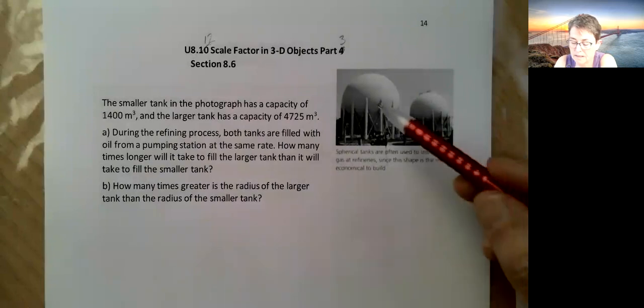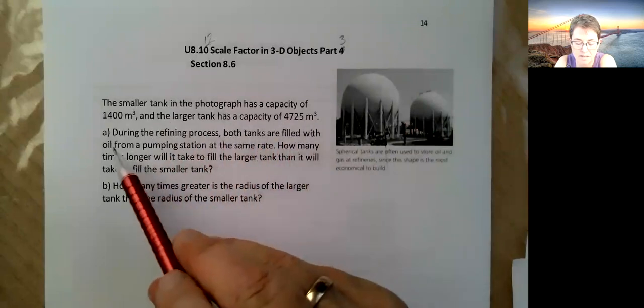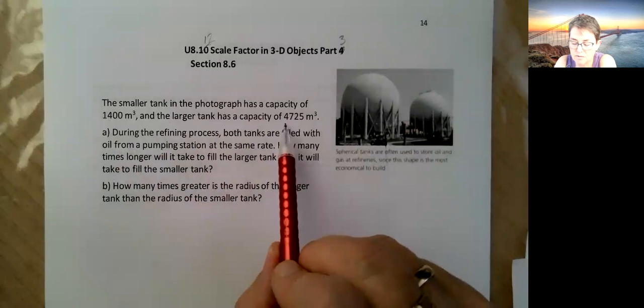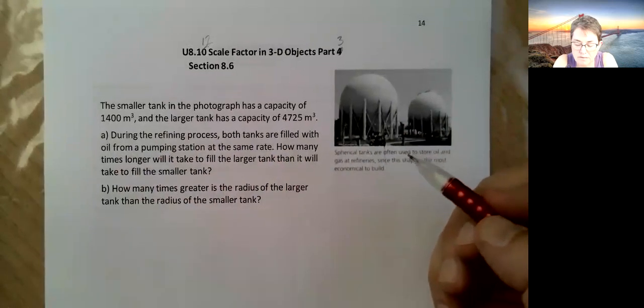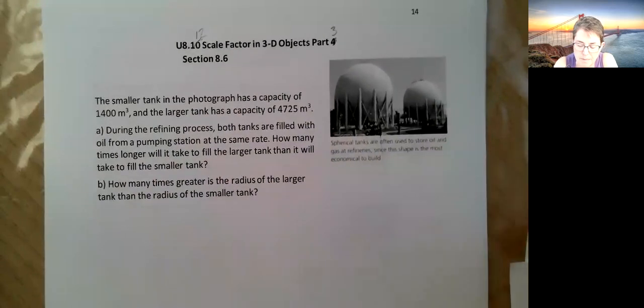Alright, so we've got a couple of big oil tanks and it says a smaller tank in the photograph has a capacity of 1400 meters cubed and the larger one is 4725 meters cubed. During the refining process both tanks are filled with oil from a pumping station at the same rate. How many times longer will it take to fill a larger tank than it will take to fill a smaller tank?